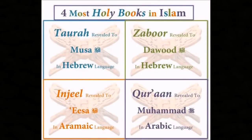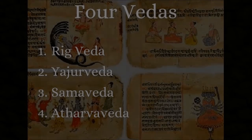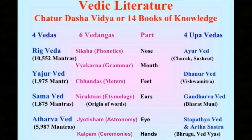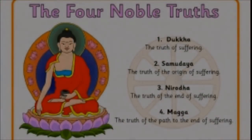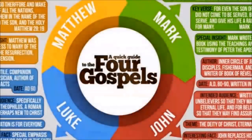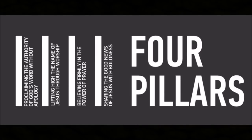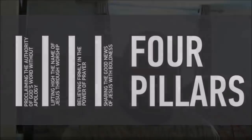Or that in Islam, there are four main books — the Torah, the Zabor, the Injil, and the Quran? And even in Vedic Hinduism, there are also four main books — the Rig-Veda, the Sama-Veda, the Yajur-Veda, and the Atharva-Veda. What about the four noble truths in Buddhism? Dukkha, Samudaya, Nirodha, and Magga. Not forgetting the four main gospels of Jesus in the Christian Bible — Matthew, Mark, Luke, and John. What about the four corners of the earth spoken of in the Bible, the four winds of the earth, the four horsemen of the apocalypse in the book of Revelations, or the four ages of man? Why four?